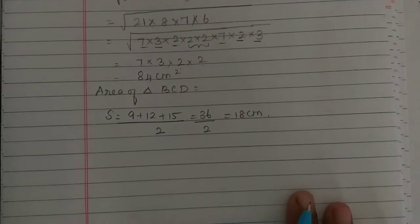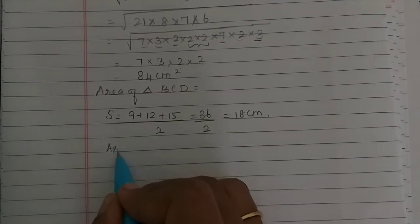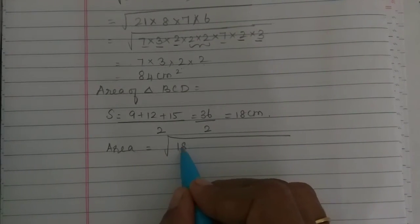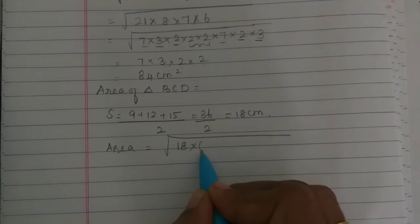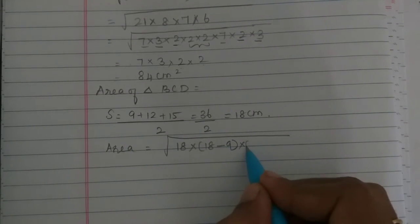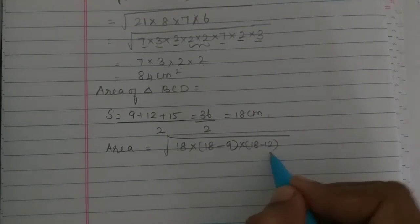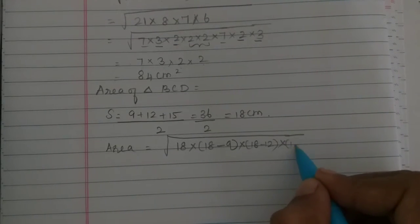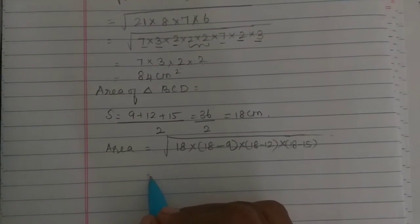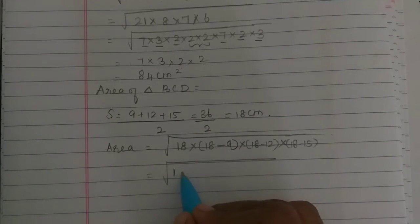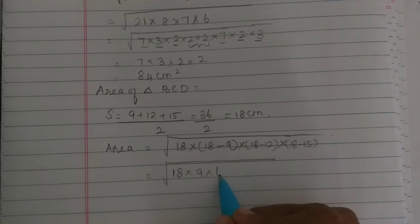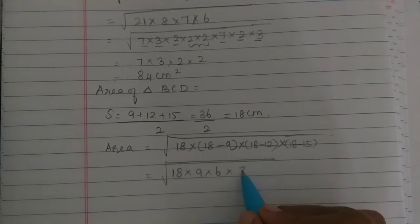Now, area of triangle BCD equals the square root of S into S minus 9 into S minus 12 into S minus 15. With S equal to 18, this becomes the square root of 18 into 9 into 6 into 3, since 18 minus 9 is 9, 18 minus 12 is 6, and 18 minus 15 is 3.